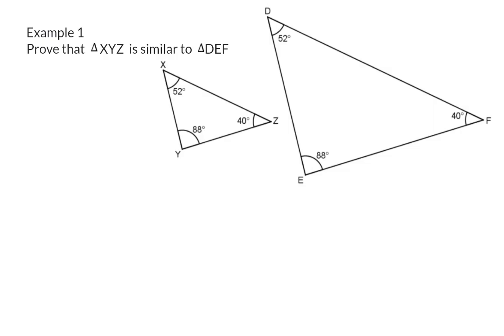Example 1. Prove that triangle XYZ is similar to triangle DEF. Just like when proving congruency, we're going to start off mentioning which triangles we're going to prove similar, and then we're going to list the three minimum requirements.